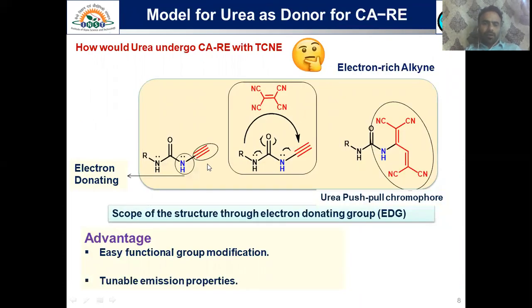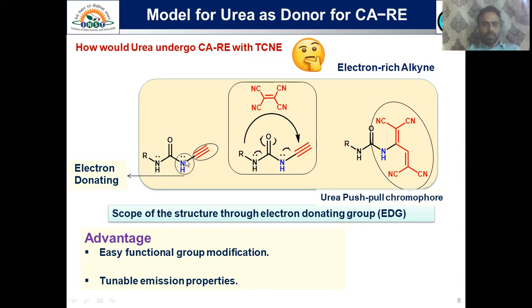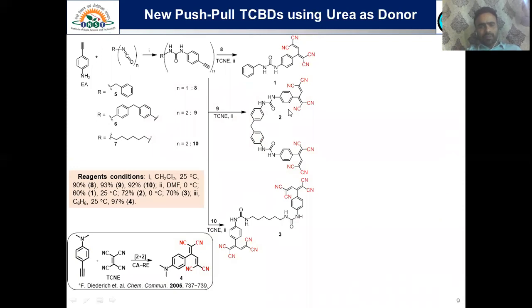The hypothesis was: since urea has two nitrogen atoms with two hydrogens and two lone-pair electrons, and the carbonyl group is in complete resonance with both lone-pair electrons, if we bring an alkyne onto one side, the lone-pair electrons will be in resonance with the alkyne. Then if we bring the acceptor molecule close, we could have a cycloaddition reaction. This worked, and we synthesized three molecules using the same procedure, comparing their properties with a reference molecule synthesized earlier in 2005, and then checked their photophysical properties.